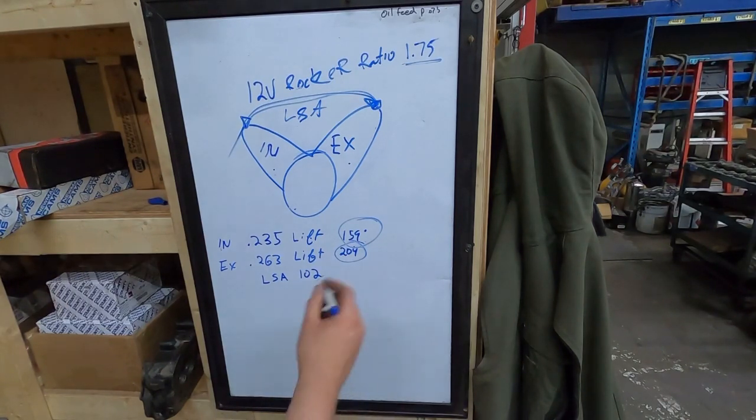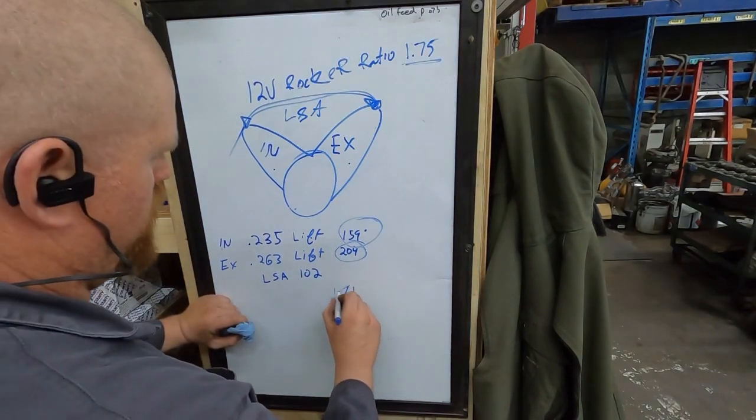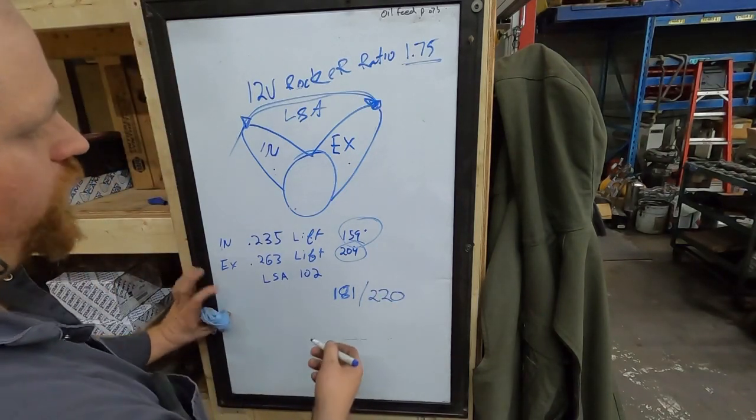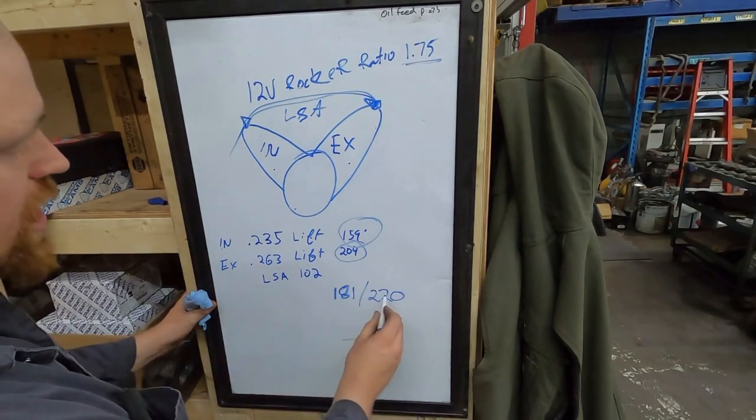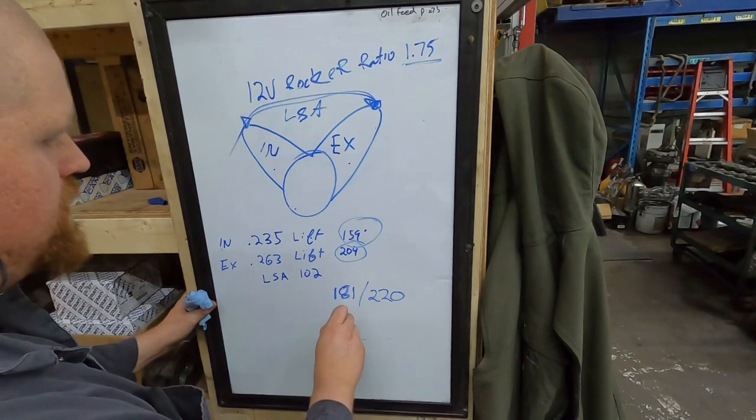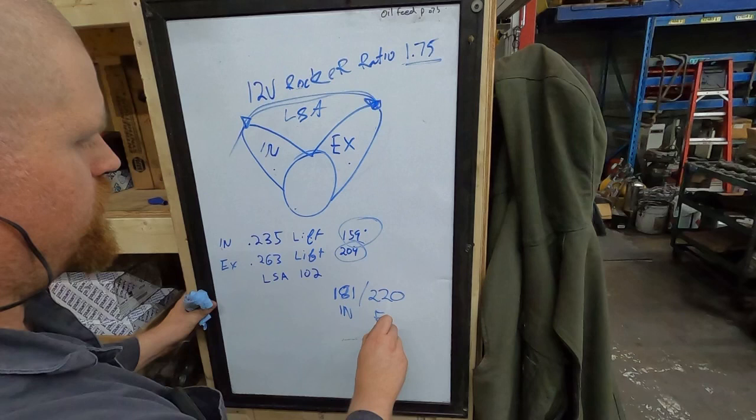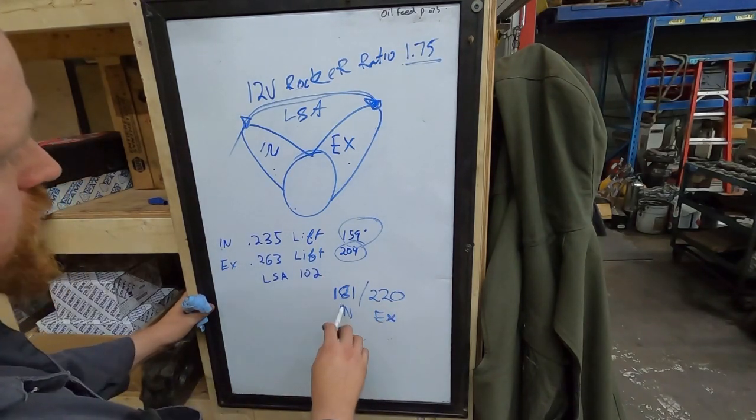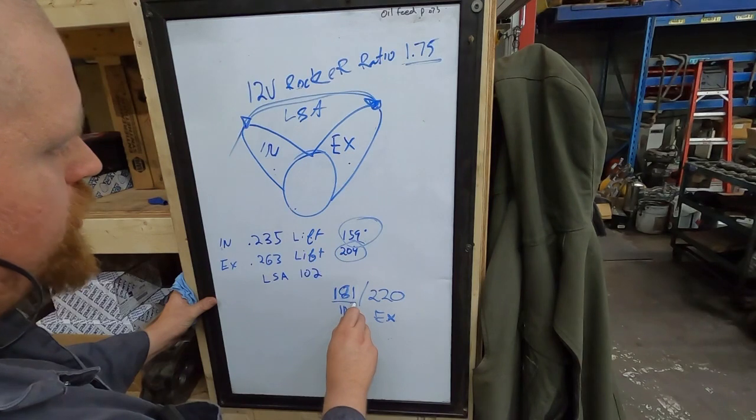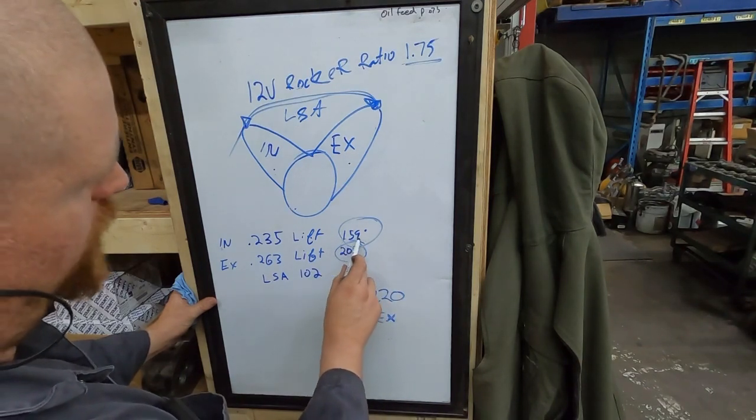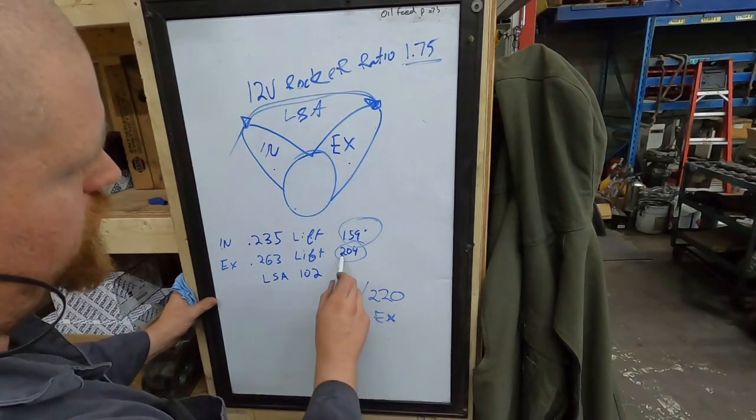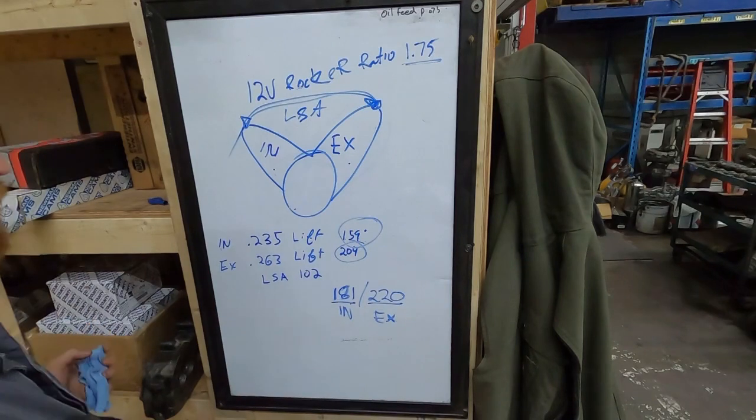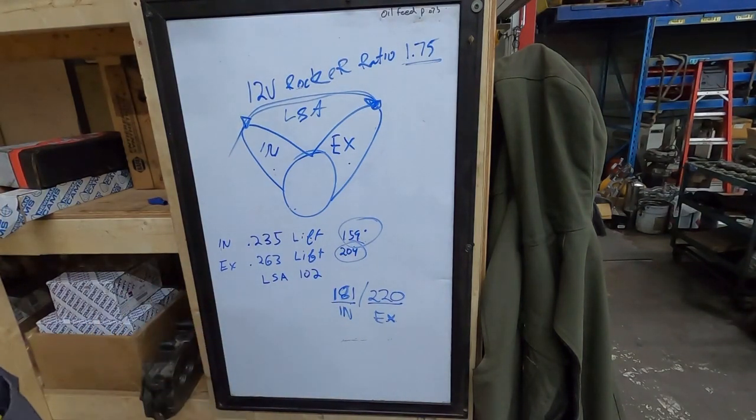So now hopefully this gives you kind of a little bit of an idea of what we're talking about when you're talking lobe separation. So if you get a camshaft, like a 181, 220, or a stage four camshaft, which is very similar to this. So that's what they're talking about is a 181, 220. This is going to be your intake duration, and this is your exhaust duration. I don't know what the lift off the top of my head or the lobe separation on one of those is from Hamilton, but that's what it's telling you. So your intake valve is going to be opening 181 degrees of crank rotation versus your stock one at 159. And then your exhaust is going to be open 220 versus 204. So basically it lets more air in and more air out, that's the simplest way to explain it.